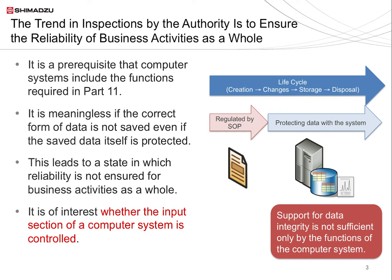This is represented simply in the figure on the right. The main challenges to achieving data integrity are to decide which analyses to perform, by what procedure to perform them, and to stipulate those things effectively in SOPs. Then, to decide to properly protect the data created in conformance with these SOPs within a computer system, and to ensure the total integrity of that data based on a life cycle of data generation, change, retention, and disposal.